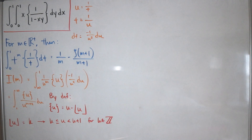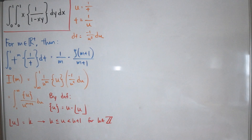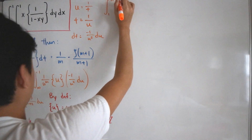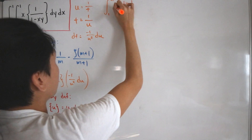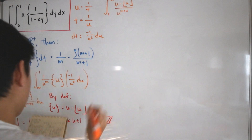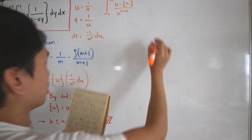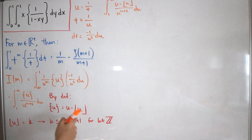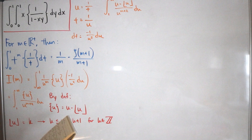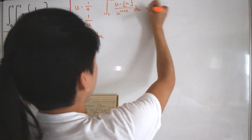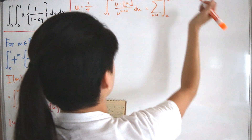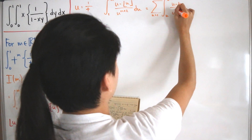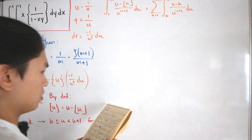Using that definition, we substitute into the integral. We can write this as an infinite sum from k = 1 of the integral from k to k+1 of (u minus k) divided by u^(m+2) du. This converts the integral over [1, ∞) into a manageable infinite series of integrals over unit intervals.